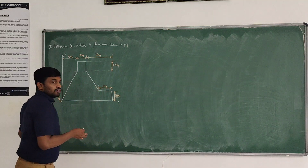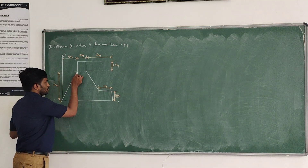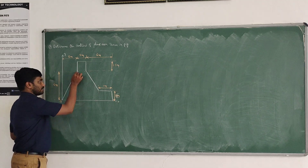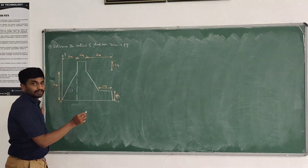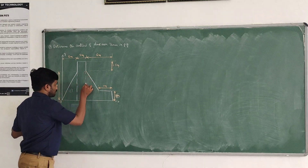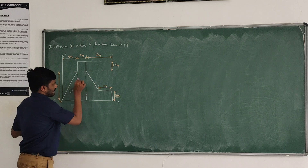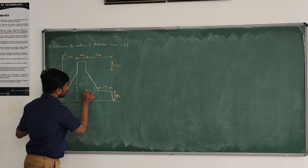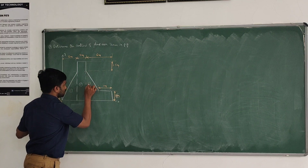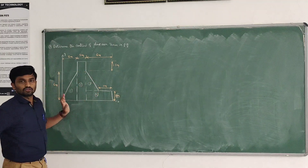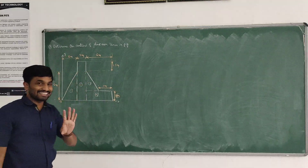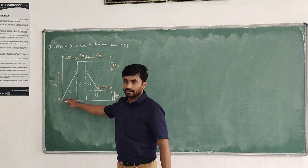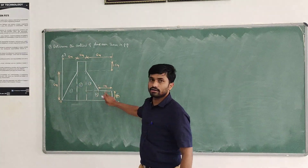Identifying the basic shapes plays a major role. If we divide this into a first basic shape, this is a triangle. Next, dividing this one — this is a rectangle. Next, this one is a triangle, and this is a rectangle. So we have divided the given plane area into four basic shapes: triangle, rectangle, triangle, rectangle.